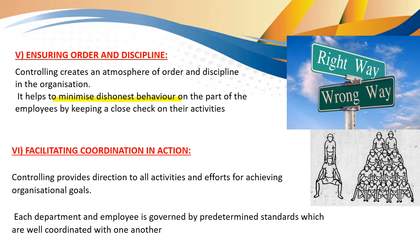The sixth is facilitating coordination in action. Coordination refers to integration and unity in whatever they are doing. Once standard performance and rules and regulations are set in place, employees will start to achieve the organizational goals. Every department, division, section, and team has their own standards. Once employees know their standards, they work unitedly towards achieving those standards so that individually they don't get affected, but as a team they stand strong and work together to achieve their targets.